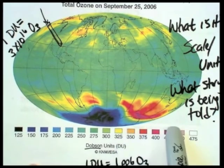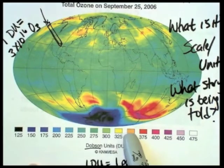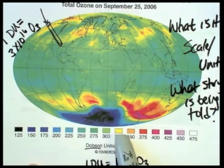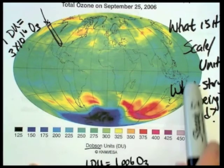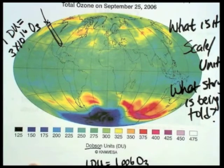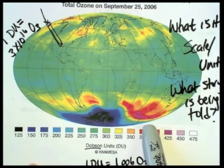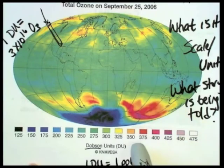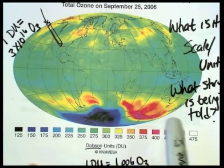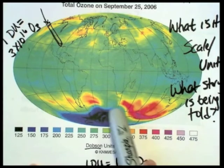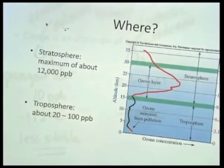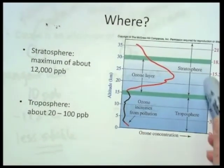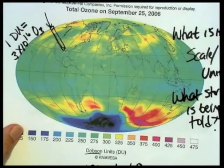All righty, so we want to understand why is the story being told? Why is the story coming out like this where there is a region of very low ozone concentration compared to the rest of the world? So we had to understand basically what is the Dobson unit, what is this picture telling us, and it's just really kind of piquing our interest to the story, and we're going to spend the rest of these three weeks understanding this story so that when we look at a picture like this, we know exactly what's going on.